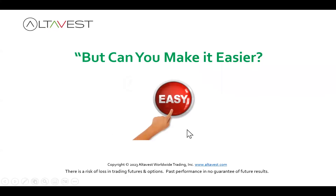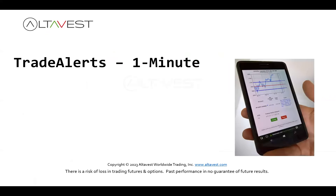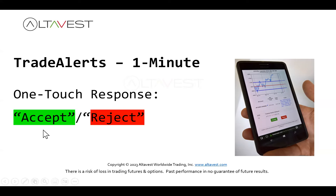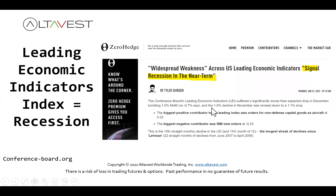We can make it even easier with our trade alert functionality that pushes the trade directly to your smart device. All you have to do is touch your screen to accept the trade, and we'll execute it. From there, the software automatically tracks and monitors it, scans it, and decides when to get out for a profit or a loss. You either touch accept or reject — that's all you have to do.